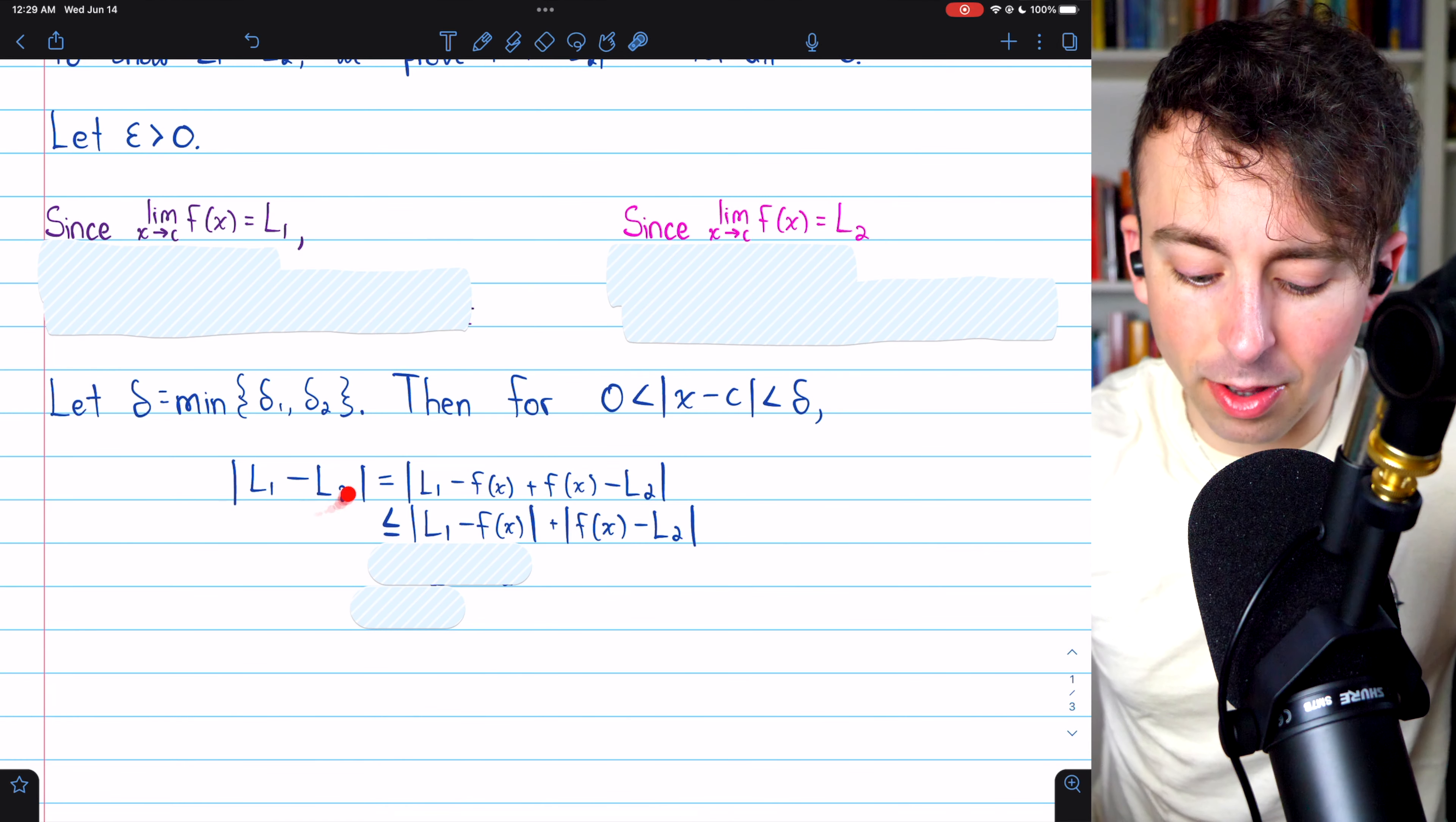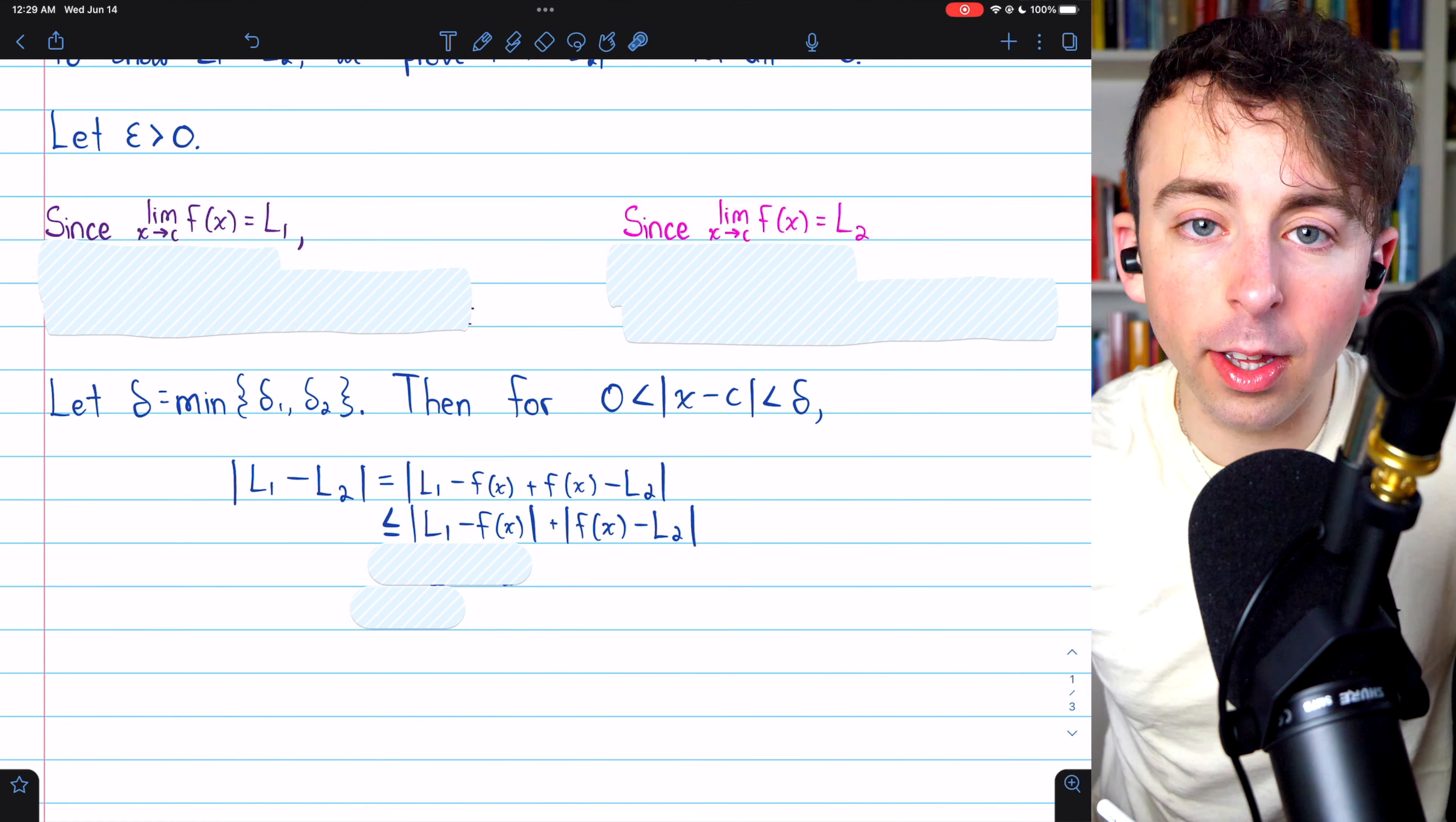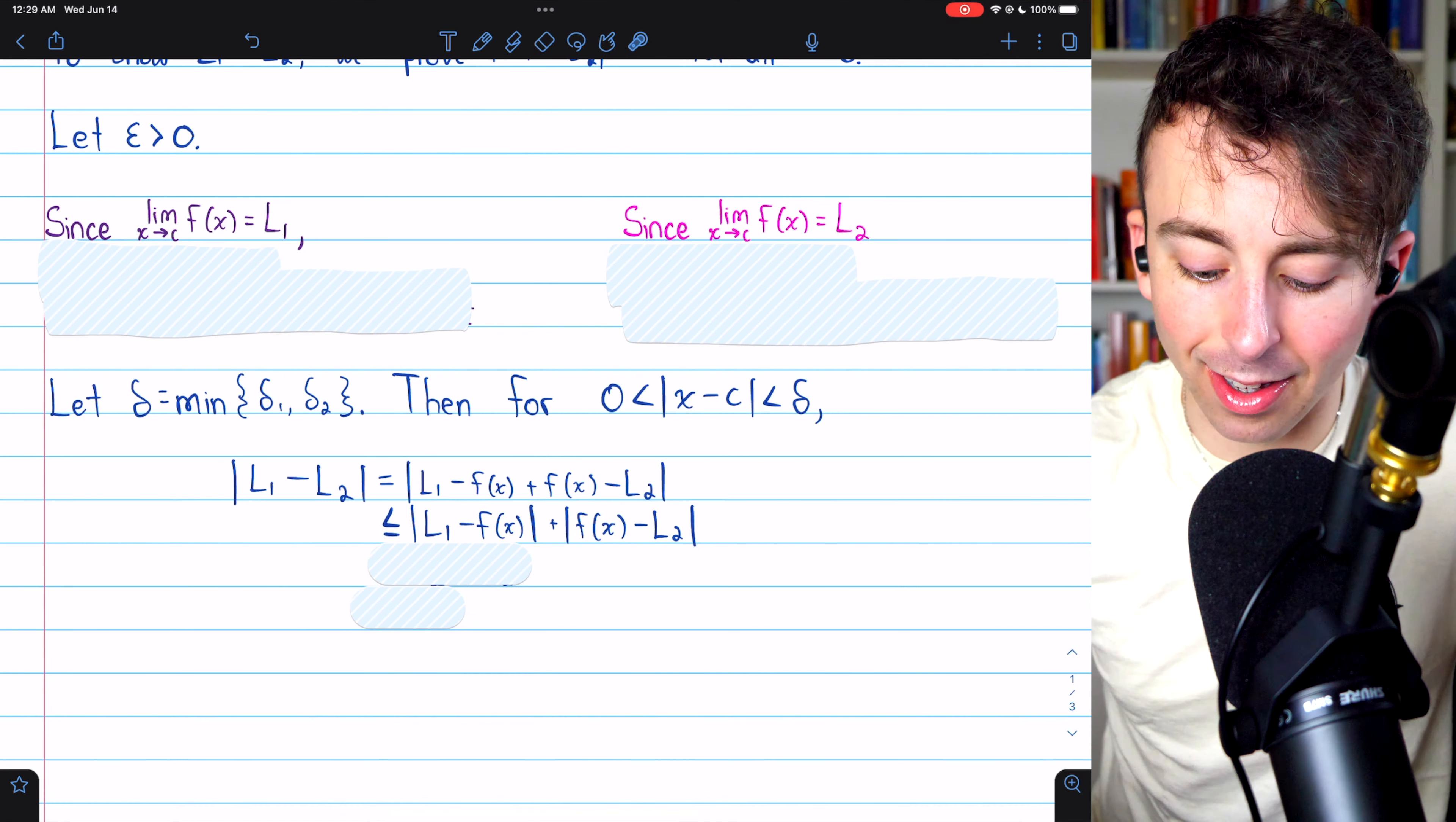But what delta is going to make the proof work? Well, if we consider this distance, we would like to get the function f of X involved in this expression, because we can control how far f of X is from L1, since it's a limit, and we can control how far f of X is from L2. So, there's not much we can do with this unless we get f of X involved. So, we subtract f of X and add f of X.